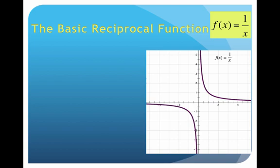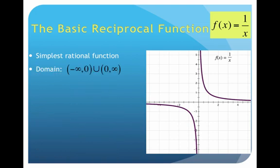Here is what the reciprocal function looks like. We can see it has two pieces — a piece in the first quadrant and a piece in the third quadrant. Let's talk about the characteristics of this graph. The domain: what can we not plug in? We can't plug in 0 — we get something undefined. That's what we see in the domain: negative infinity to 0, union 0 to infinity. That's the exact same thing as x not equal to 0, because we can't divide by 0.